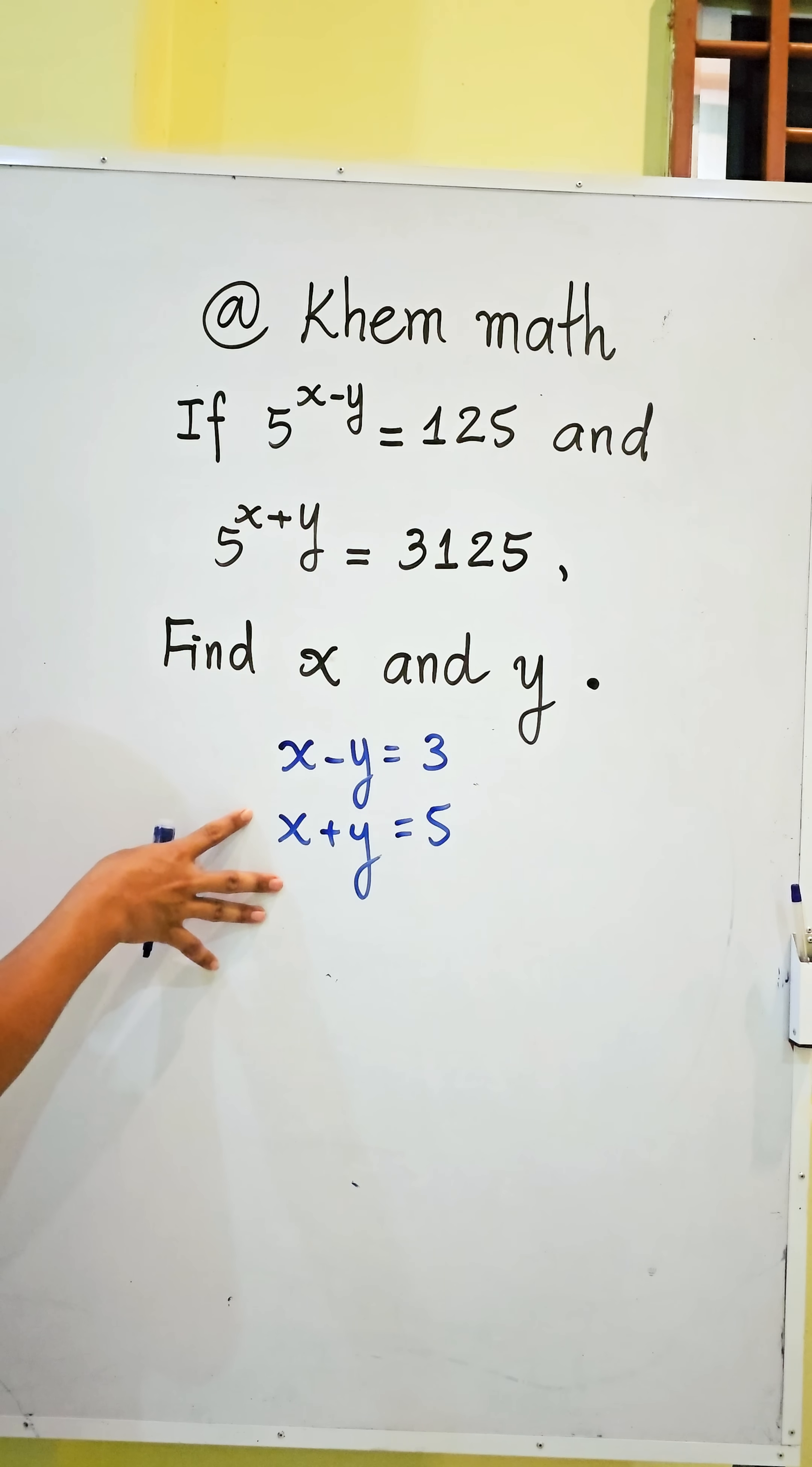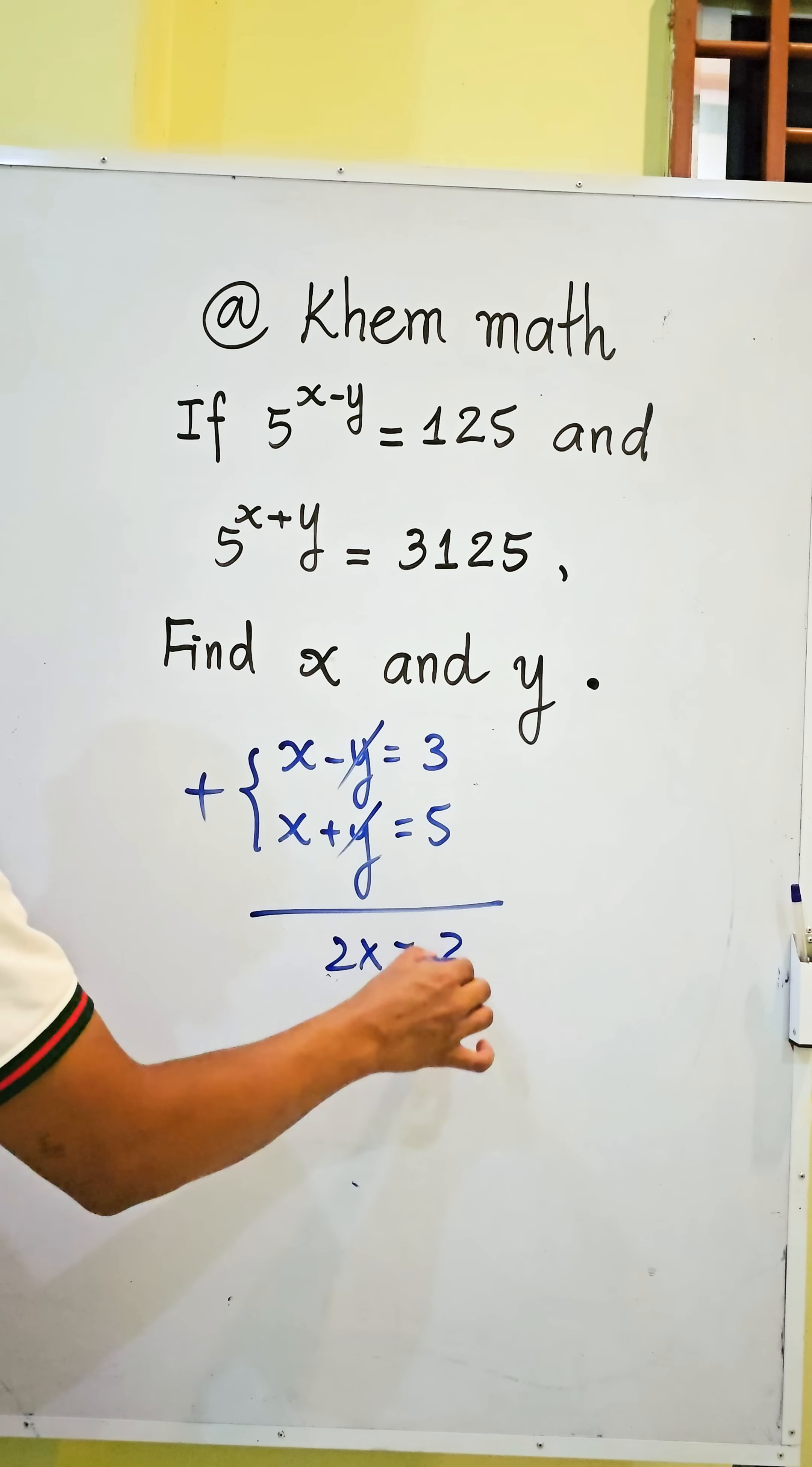And now we have two equations: x minus y equals 3 and x plus y equals 5. So now we're adding both sides of these equations. The y and negative y simplify. We get 2x equals 8, so we divide both sides by 2.